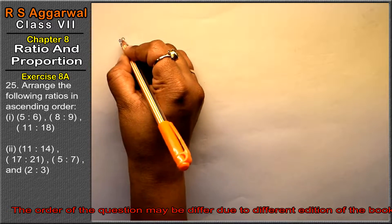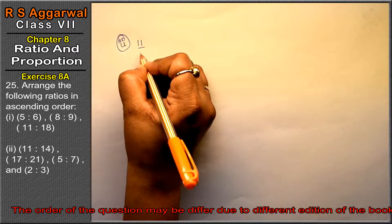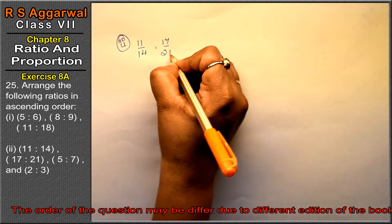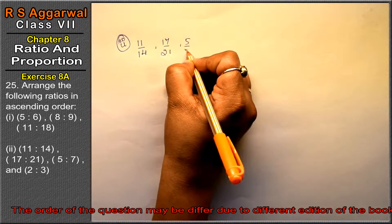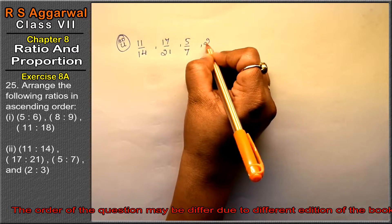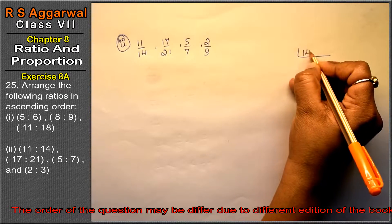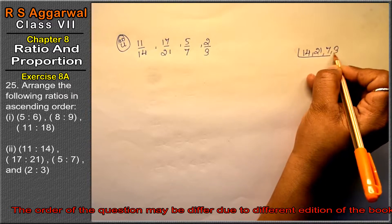Let's do second part. Second part is 11 upon 14, 17 upon 21, 5 upon 7, and 2 upon 3. So we have all the denominators: 14, 21, 7, and 3.